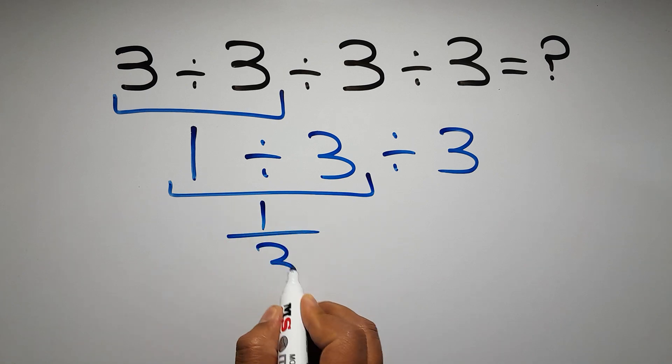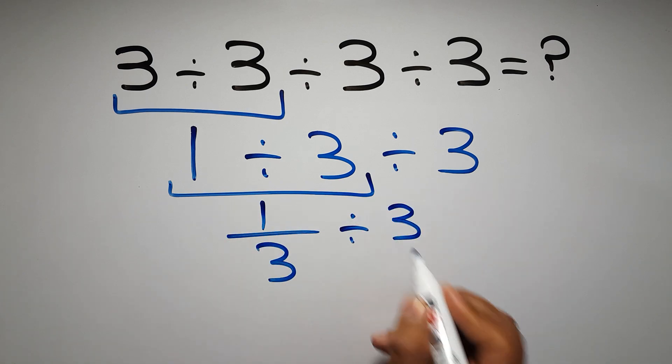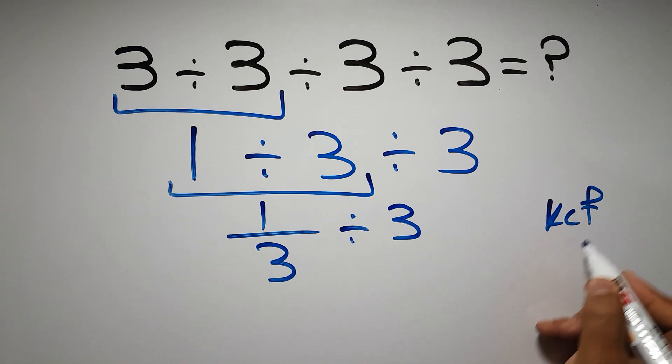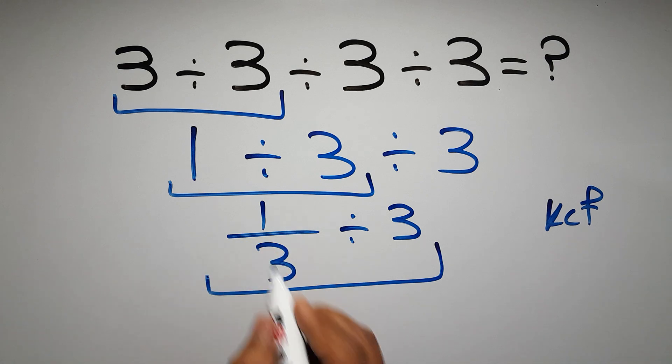then divided by 3. Now according to the KCF rule, K stands for Keep, C stands for Change, and F stands for Flip. We can write: keep the first fraction,